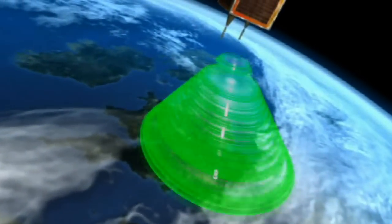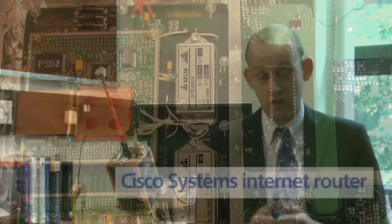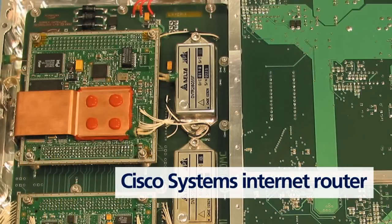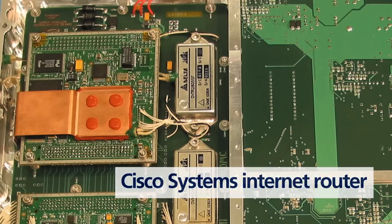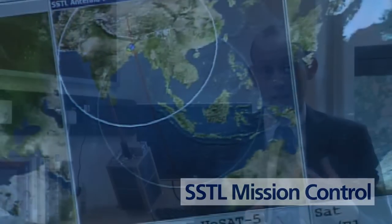We were able to work on experimenting with the network in space by putting a Cisco systems internet router on board SSTL's UK DMC satellite. Doing that allowed us to show that a router would work in the space environment and it allowed us to do tests and demonstrations with internet technology from space. We ran a web server in space, we did the first tests of the new internet protocol IPv6 from space and we also experimented with mobile networking and seamless handovers.